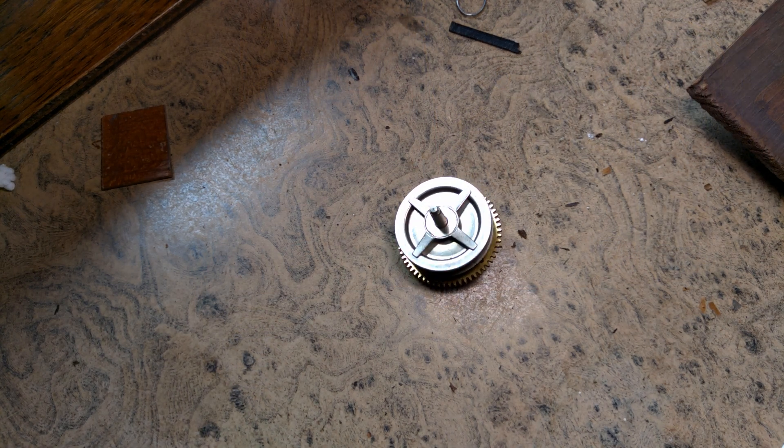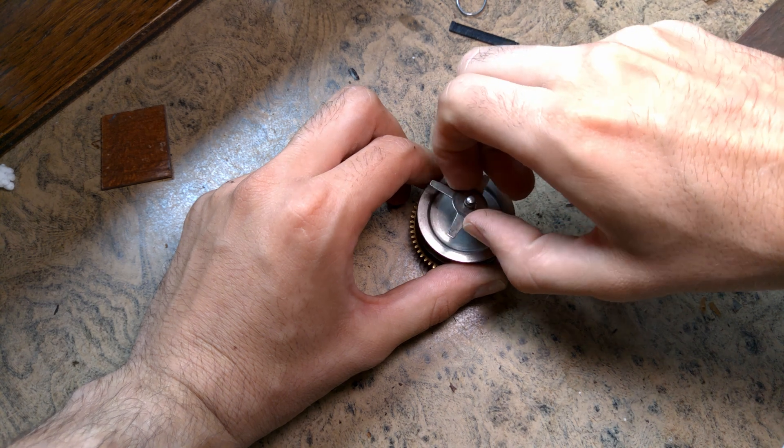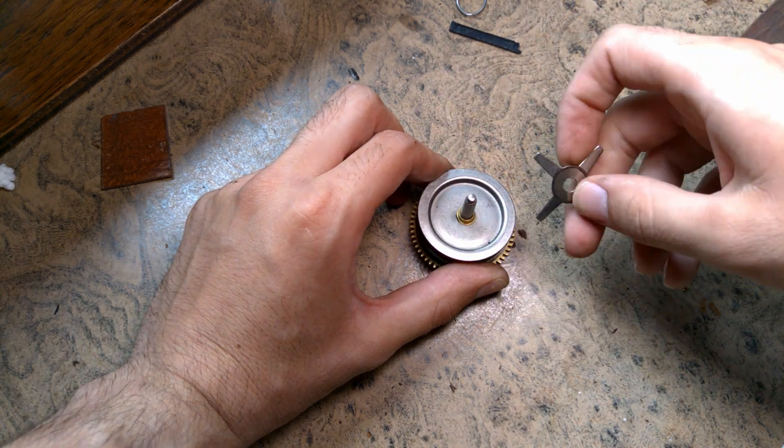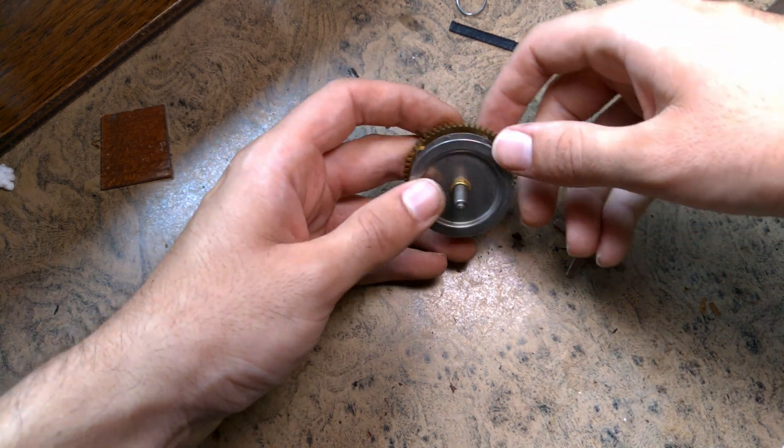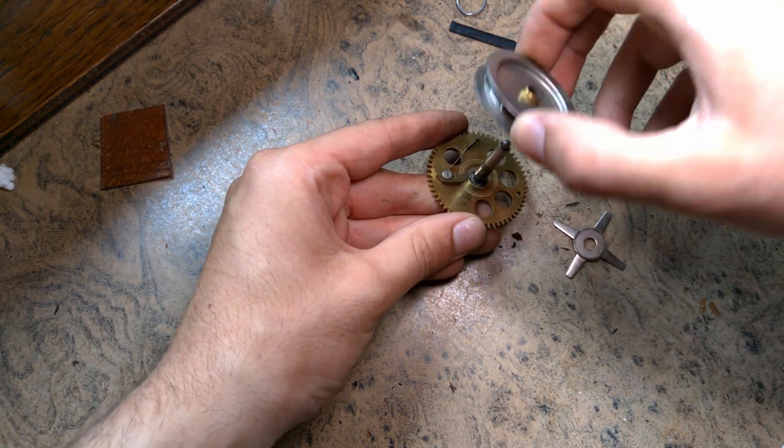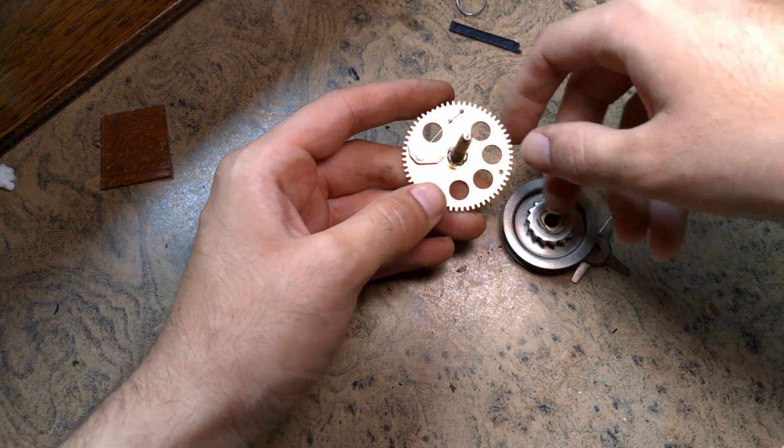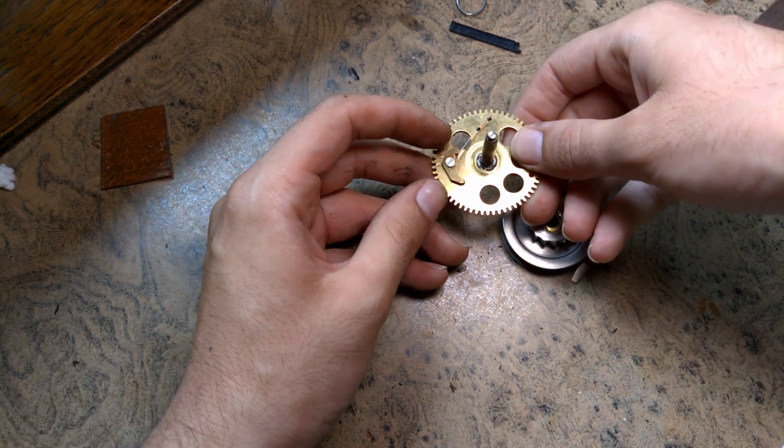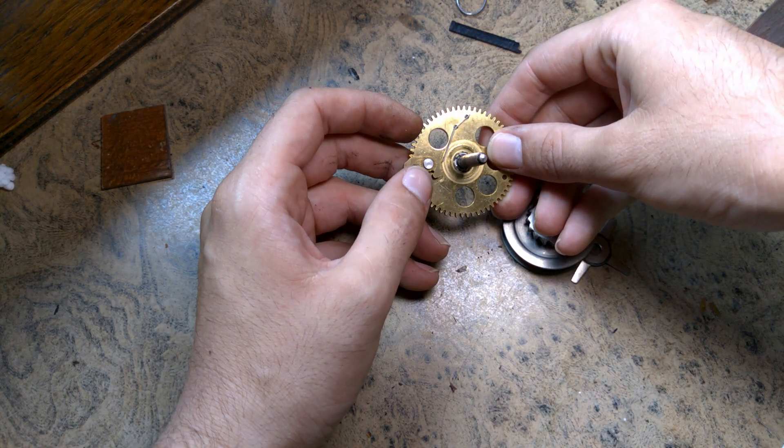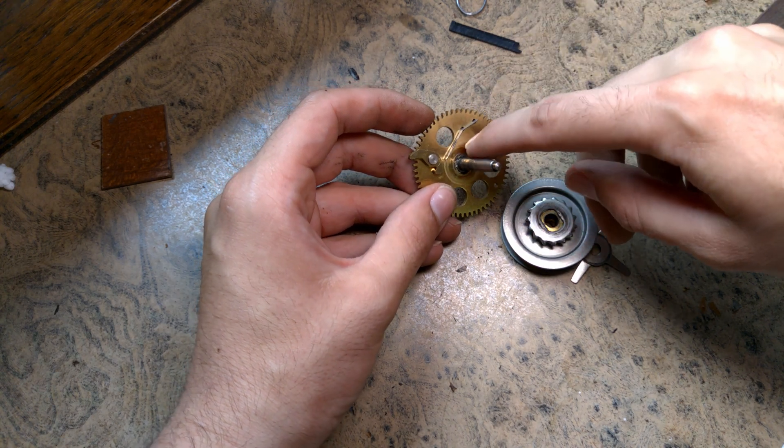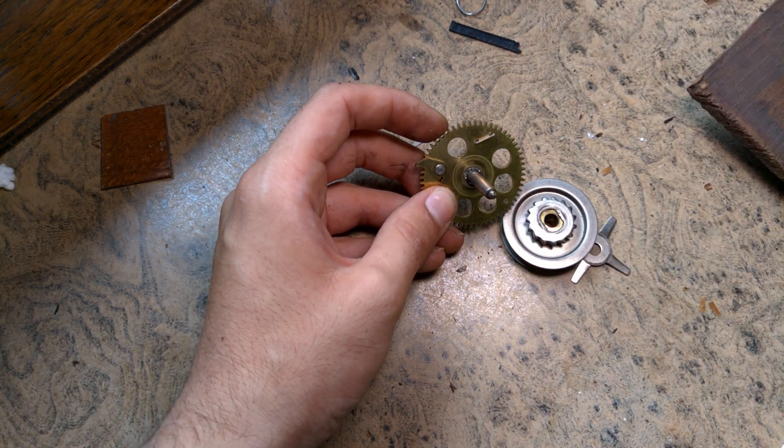So I got it out, I removed this clip here that was holding everything in place. So this is a spring that gives some tension, like basically pushes this down onto the ratchet. We have part of the ratchet assembly here, we have the ratchet, and now you can see the spring here is going to break any second now. Yeah, it is broken.